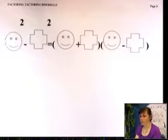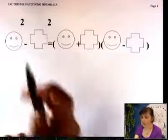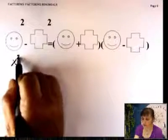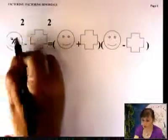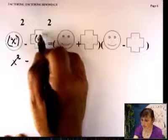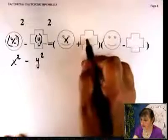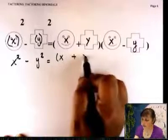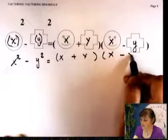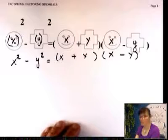How about the difference of two squares? They may look very obvious or they may be hidden. Let's do x squared minus y squared. This looks like a square, so you can put an x here and a y here. It factors as the first plus the second, times the first minus the second: x plus y times x minus y.